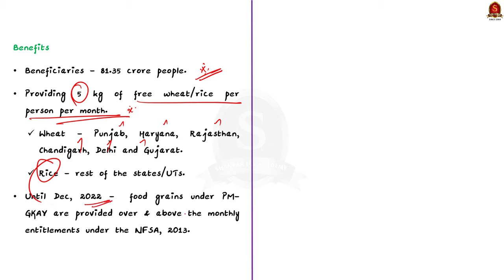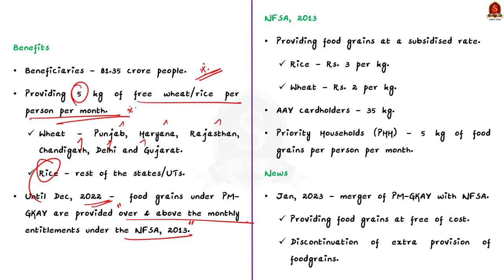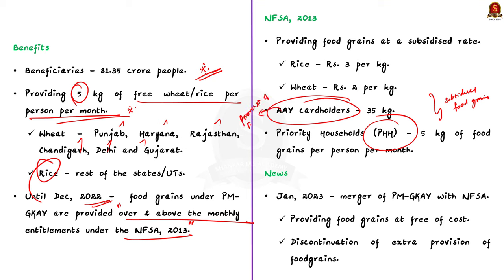Here note that till December 2022, food grains were provided over and above the regular monthly entitlements under the National Food Security Act 2013. Under NFSA, entitled beneficiaries such as Antyodaya Anna Yojana or AAY cardholders and Priority Household or PHH cardholders received subsidized food grains. Priority Households include the poorest section of the population, and AAY cardholders are the poorest of the poor. Both were given food grains at Rs. 3 per kilogram of rice and Rs. 2 per kilogram of wheat. For Priority Households, the Centre provided 5 kg of food grains per person per month; for AAY, the Centre provided 35 kg of food grains per family — both at the subsidized rate.